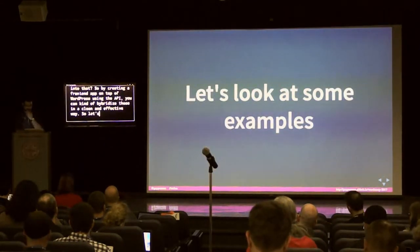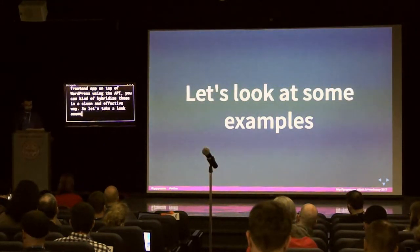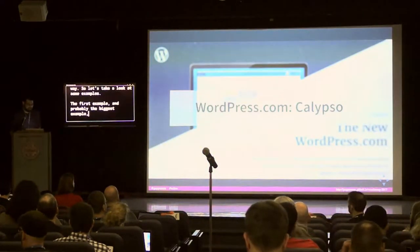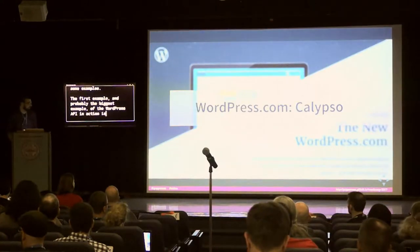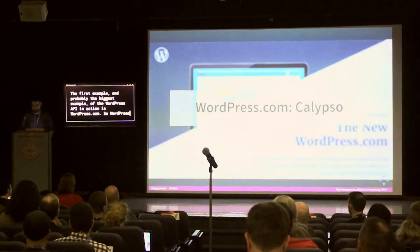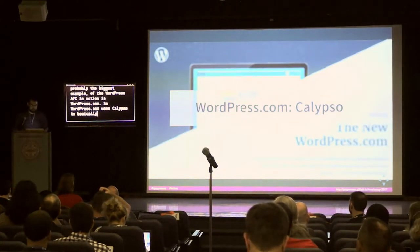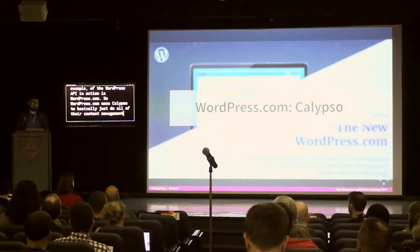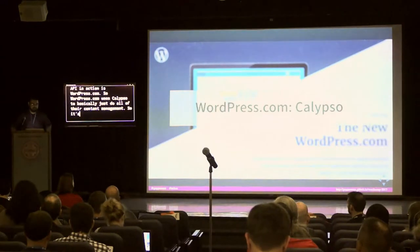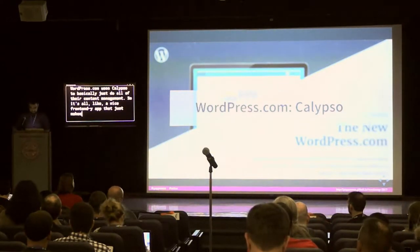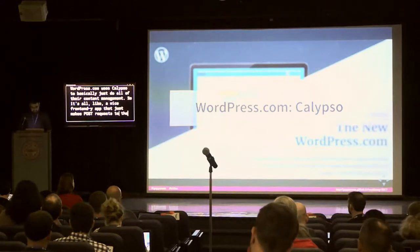Let's look at some examples. The first and probably biggest example of the WordPress API in action is WordPress.com. WordPress.com uses Calypso to basically do all of their content management — it's a nice front-end app that just makes POST requests and GET requests to the API.